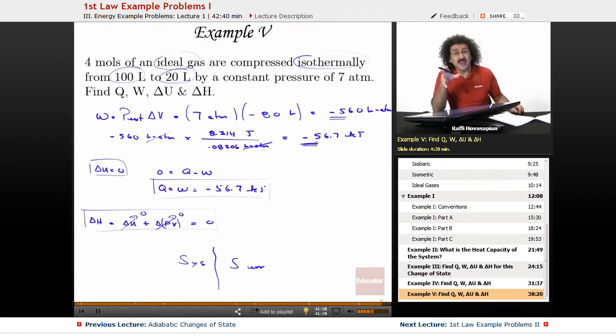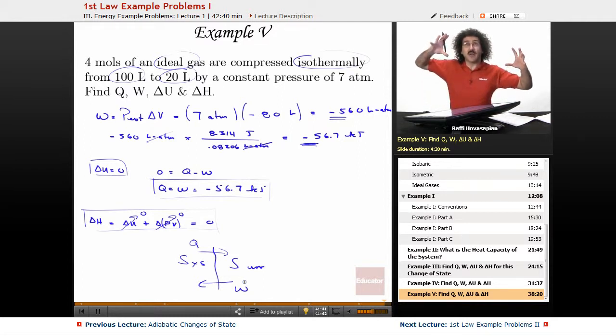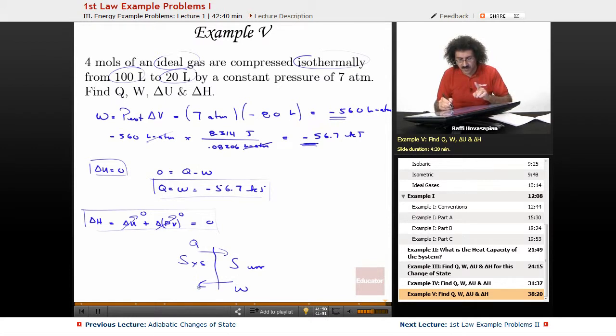The work done is actually negative. That means work is destroyed. That means work is leaving the surroundings. 56.7 kilojoules is moving from the surroundings to the system as work. This is a compression. The surroundings are doing work on the system, 56.7 kilojoules of work. 56.7 kilojoules of energy transfer as work from the surroundings to the system.